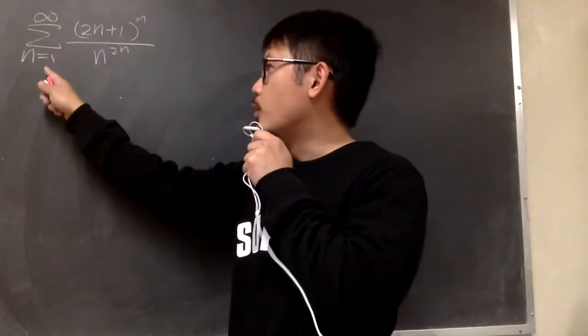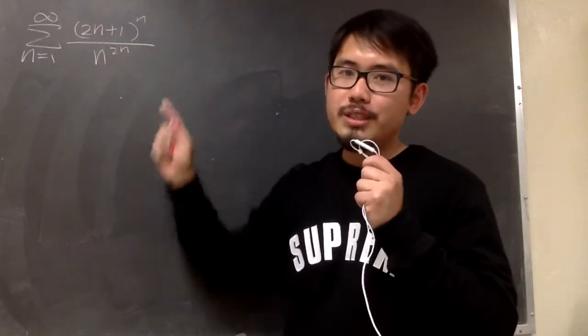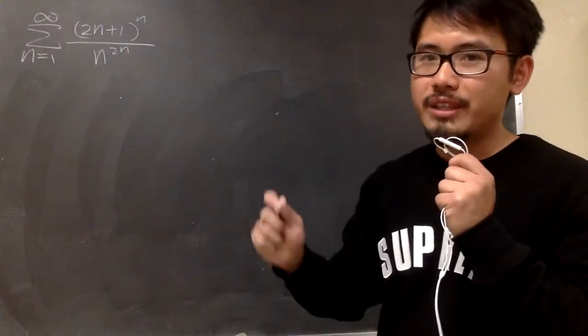Converge or diverge, sigma when n goes from 1 to infinity, parentheses 2n plus 1 to the nth power, over n to the 2nth power. We see that we have n in the exponent here and here, so let's give the root test a try.